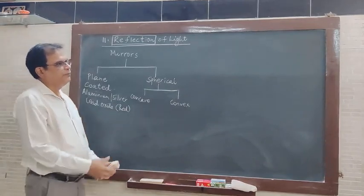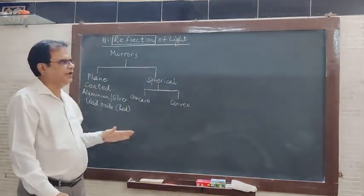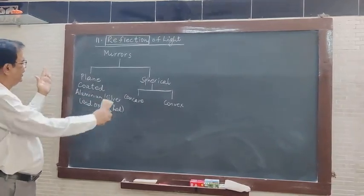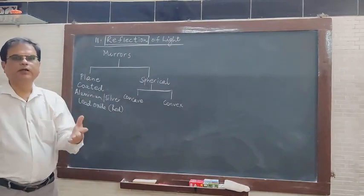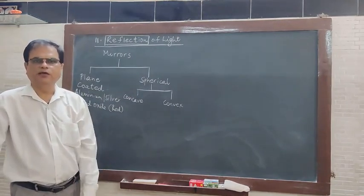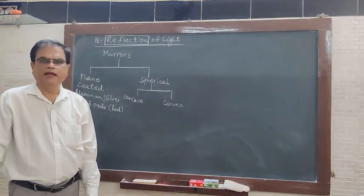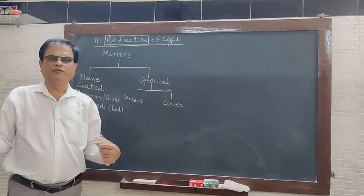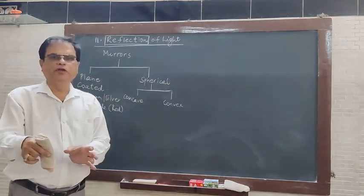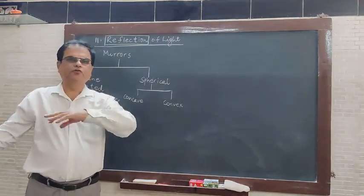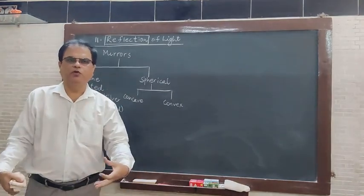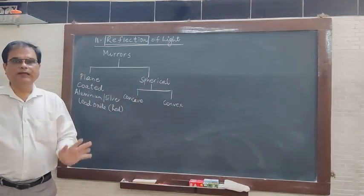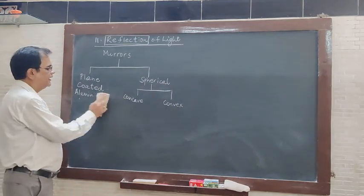Suppose if I keep two plane mirrors together at an angle. When you go to a departmental store and enter the trial room, there are mirrors on all three sides. When you enter inside, you can see the front, the right side, and the left side — so you see yourself properly after wearing the clothes. Those mirrors are kept at a particular angle to form the images.